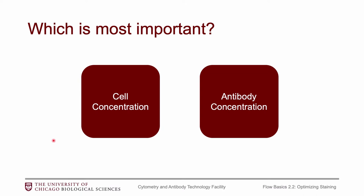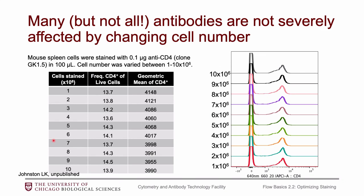So which is more important — cell concentration or antibody concentration? Cell concentration is actually not extremely important. I did an experiment where I stained mouse spleen cells with CD4, kept the staining protocol exactly the same, and only changed the cell number — from one million to ten million cells across ten tubes. The results look pretty much exactly the same: the mean of the positive population and the frequency of positive cells were very similar between tubes.